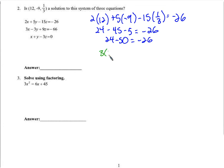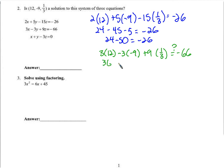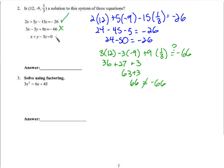Let's try the next one: 3 times 12 minus 3 times negative 9 plus 9 times 1/3. We're hoping that it gets us negative 66. We get 36 plus 27. It doesn't look good. 63 plus 3 is 66 — positive 66, but that's not the same as negative 66. So it worked in the first equation but not in the second. It doesn't matter if it works in the third. It didn't work in the second equation, so no.